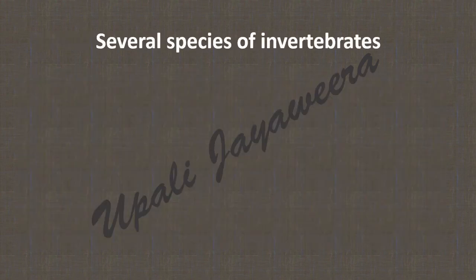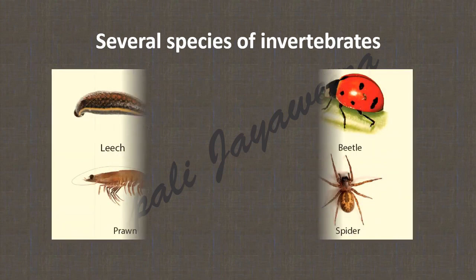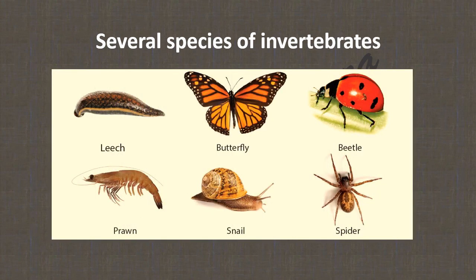Now we will refer to several species of invertebrates: leech, butterfly, beetle, prawn, snail, and spider. In these animals you cannot see a backbone.